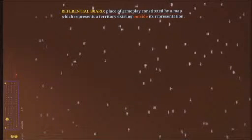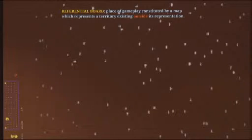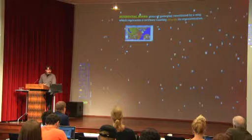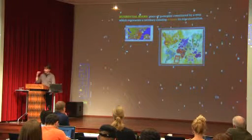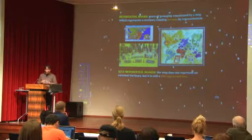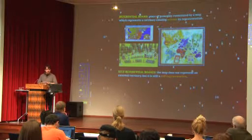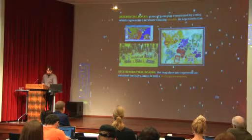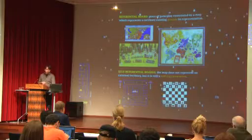The first board type is the referential board. In a referential board, the place of gameplay is constituted by a map which represents a territory existing outside its representation — as in SimCity, or Risk, or War-Omer, both tabletop games. On the contrary, there are self-referential boards, where the map does not represent an external territory but is still a self-representation — like in Pac-Man or in chess.